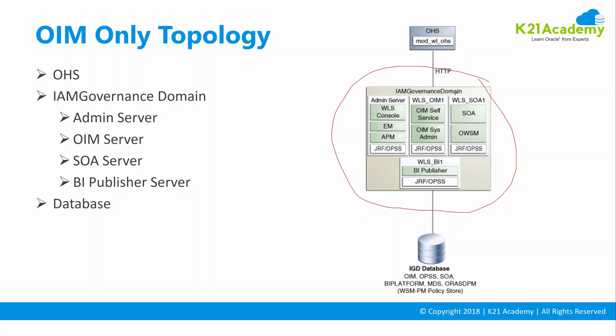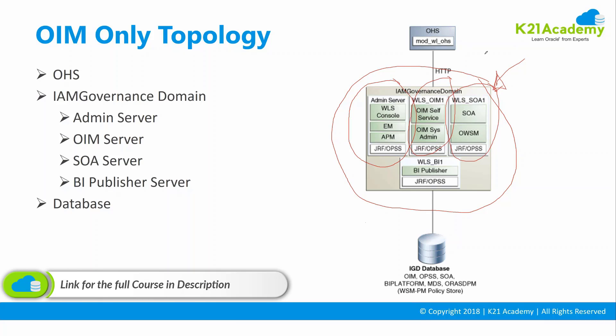That was the first of the three Identity and Access Management pillars: Identity Governance, Access Management, and Directory Services. In the Oracle Identity Manager topology, you have one domain with one admin server and three managed servers. The first managed server is the Oracle Identity Manager managed server. The second is SOA — SOA is required for workflows because Oracle Identity Manager workflows are delegated to the SOA suite.